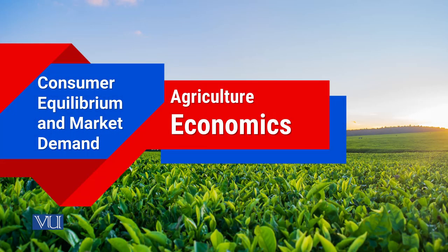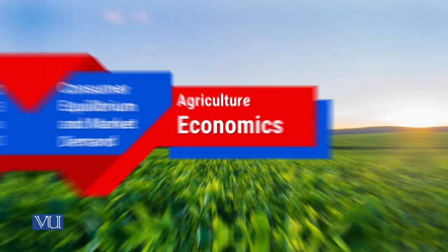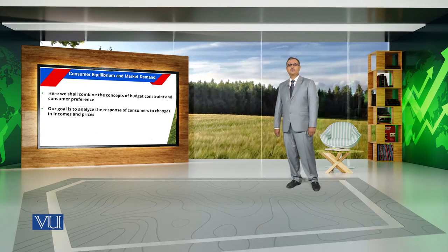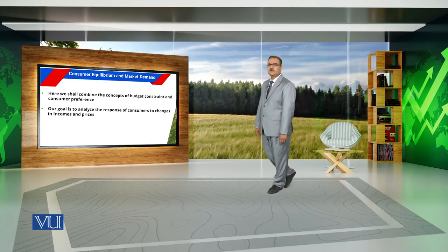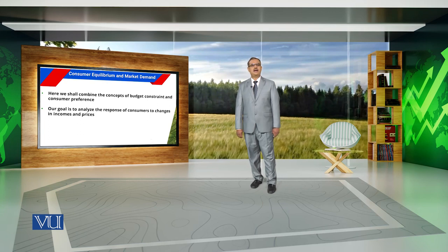Consumer equilibrium and market demand. To understand consumer equilibrium, one should have an understanding of indifference curve and budget constraint. An indifference curve denotes different combinations of two commodities that provide the same level of satisfaction to a particular consumer. Similarly, a budget constraint shows different combinations of two commodities that a consumer can afford using their limited income.